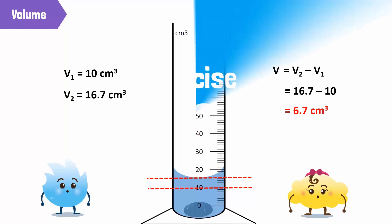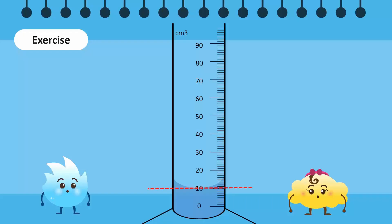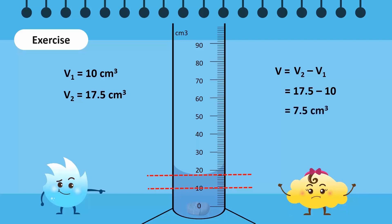Now let's do an exercise with Spiky's pebble. First we measure V1 — what is the volume of the liquid without the pebble? The volume of the liquid is 10 cubic centimeters. Now we add Spiky's pebble. What is V2? The volume of the liquid with the pebble is 17.5 cubic centimeters. What is the volume of Spiky's pebble? The volume is V2 minus V1, that is 17.5 minus 10, which equals 7.5 cubic centimeters.